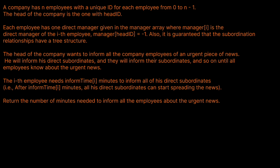A company has n employees with a unique ID for each employee from 0 to n-1. The head of the company is the one with head ID. Each employee has a direct manager in the manager array, where manager[i] is the direct manager of the i-th employee, and manager[headId] equals -1 because the head of the company doesn't have a manager. It is guaranteed that the subordination relationships have a tree structure.